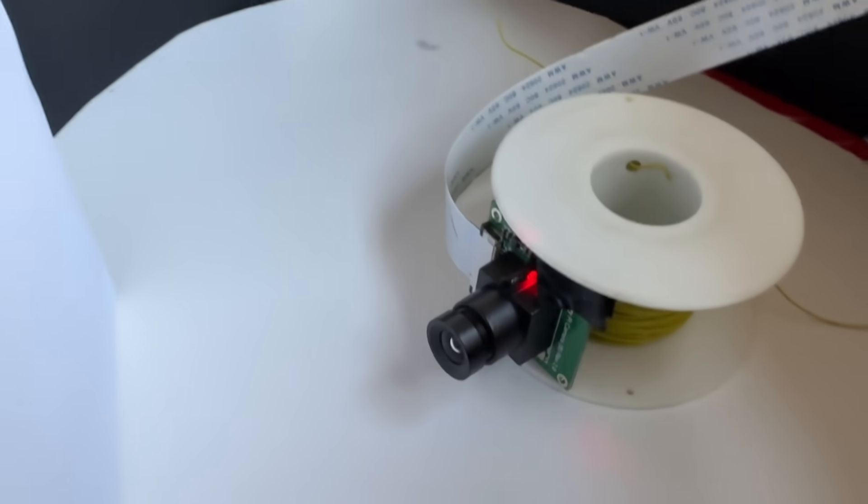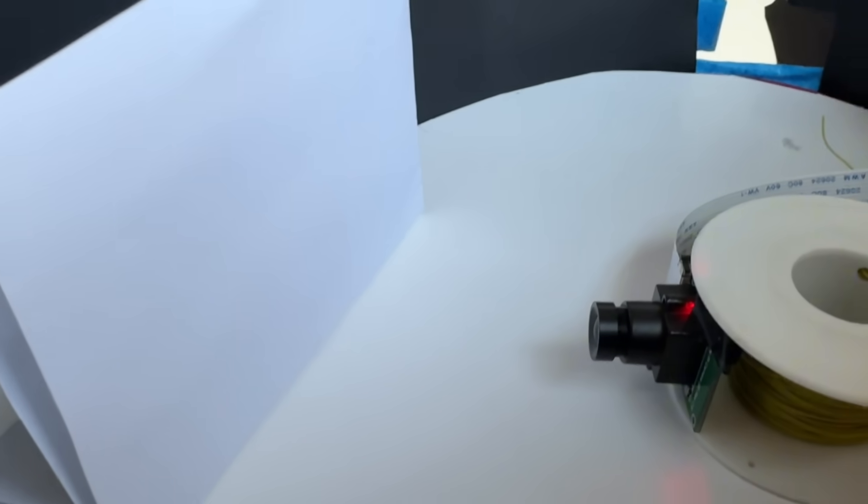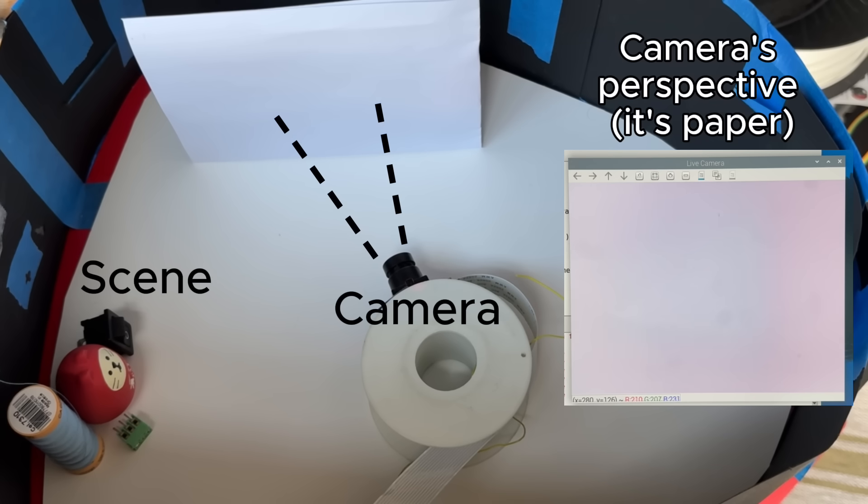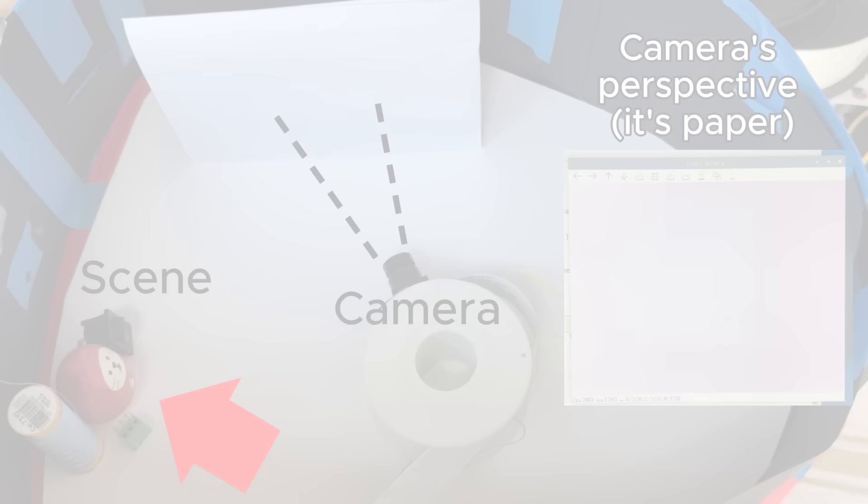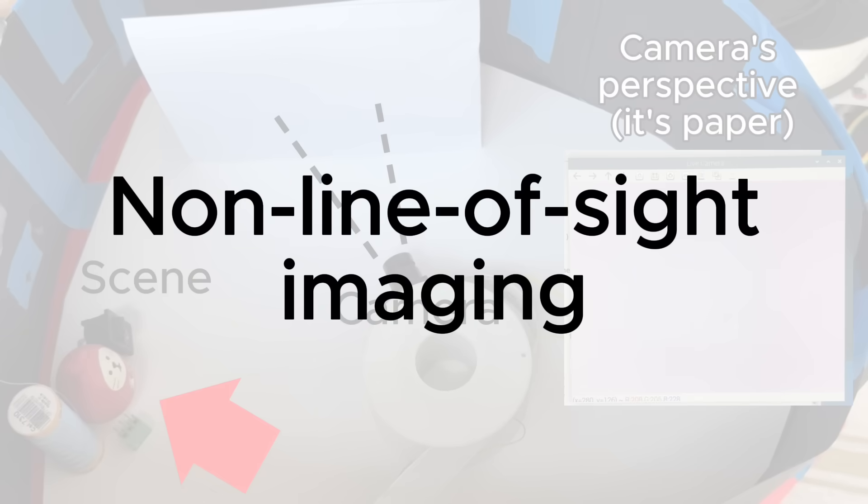This camera is facing a piece of paper. But what if we could take a photo of the objects over here that the camera can't directly see? There's actually research that aims to solve this problem in what is broadly called non-line-of-sight imaging, and I wanted to try to replicate it.